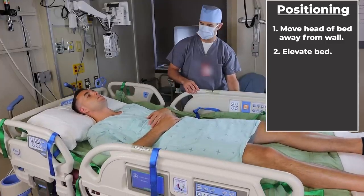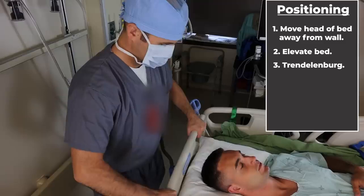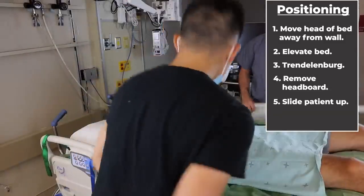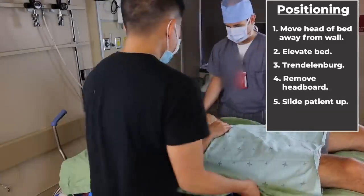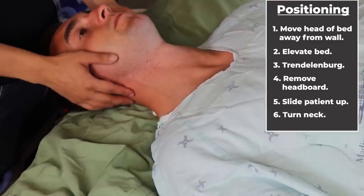And then he places the patient in a little bit of Trendelenburg, which helps to engorge the veins of the neck. He takes the headboard off the head of the bed, and then we slide the patient as far up as he'll go in the bed. Finally, gently tilt the patient's neck off to the side.